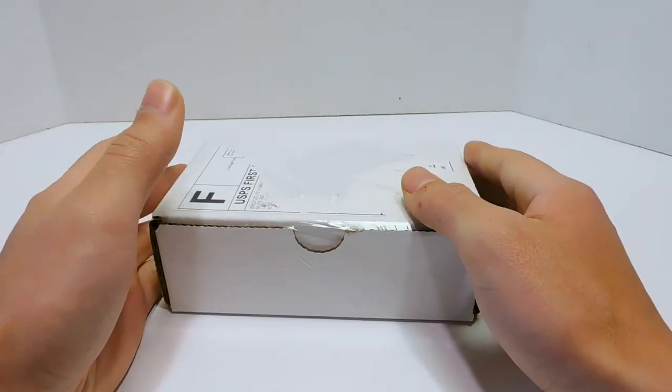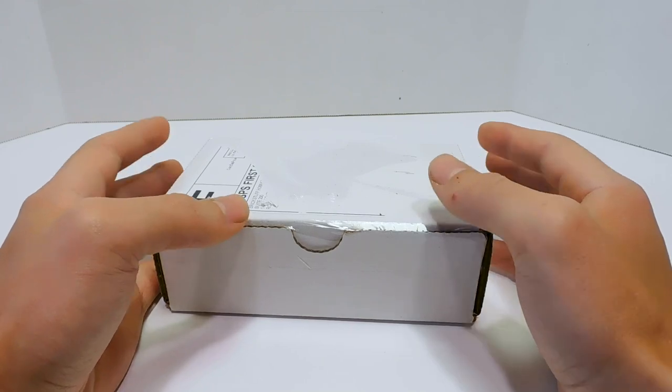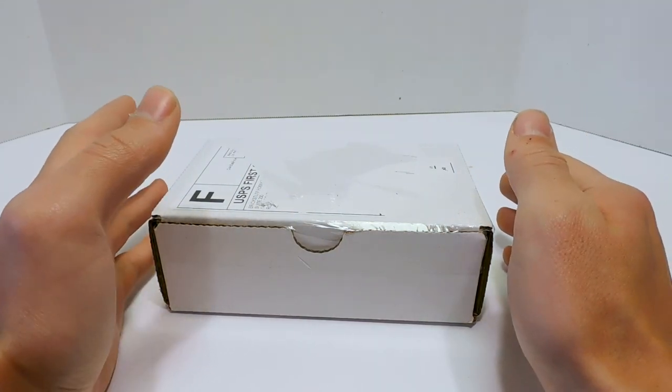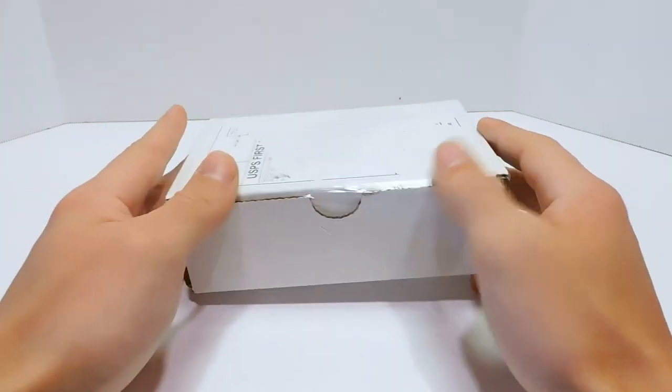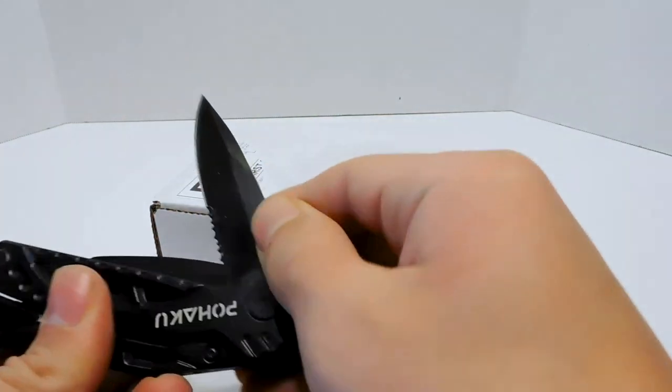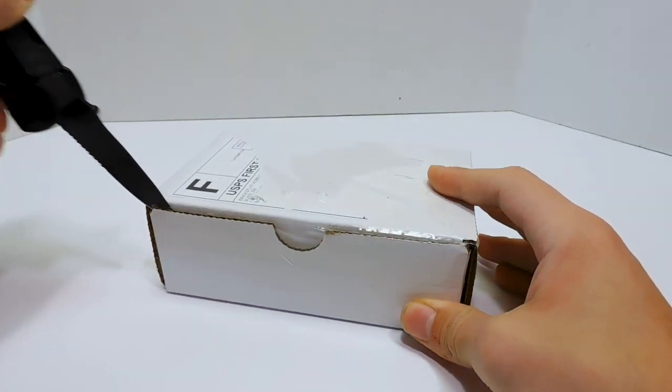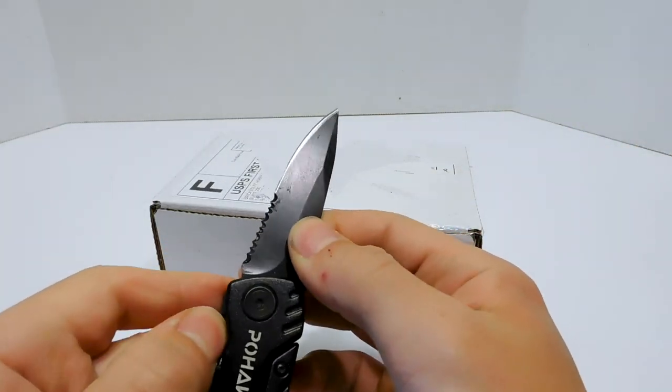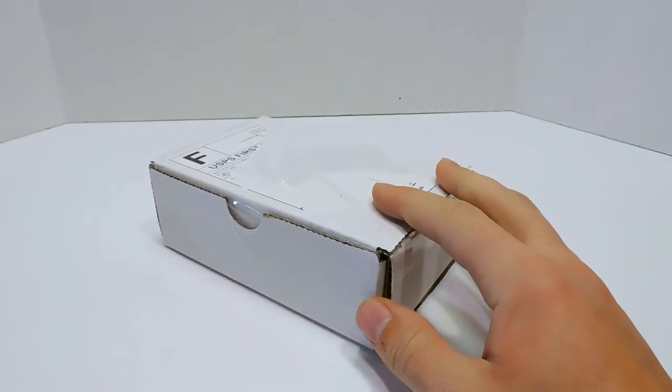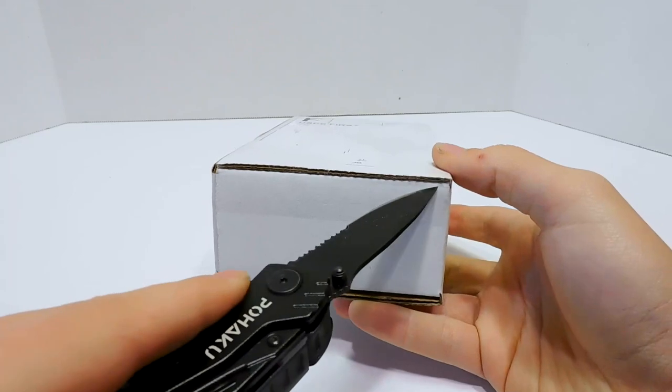So I decided to grab the starter kit from Brickstuff and see what I can do with it. This is the first time I've gotten a lighting kit. There are a handful of different companies that do lighting kits for Lego, but Brickstuff is the only one I've heard of that wants to branch out towards Mega Construx. The more support they get, the more Mega Construx sets they can make kits for.